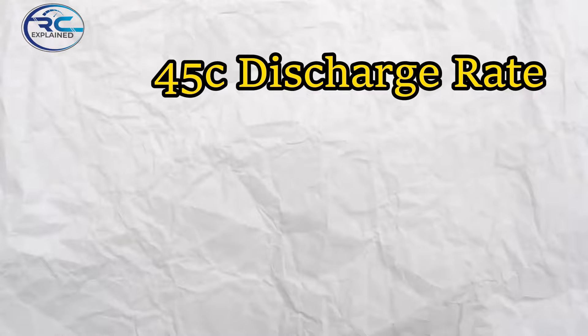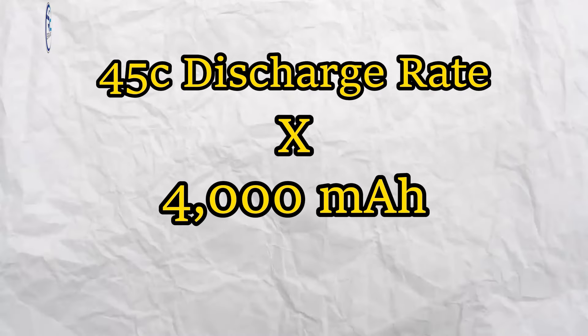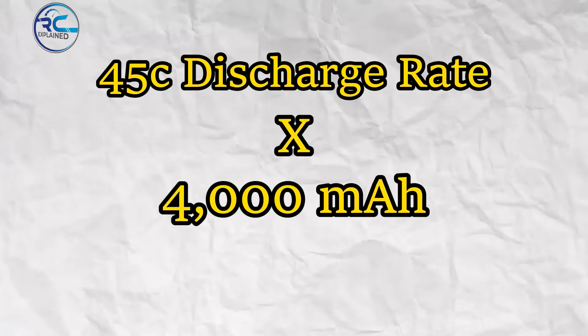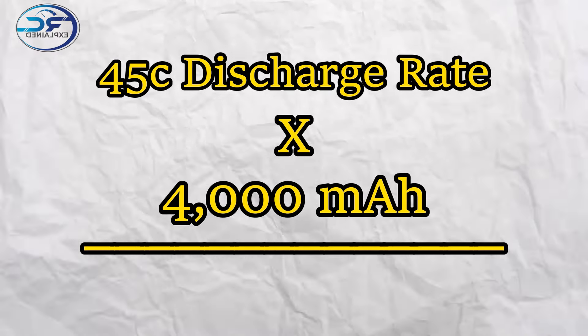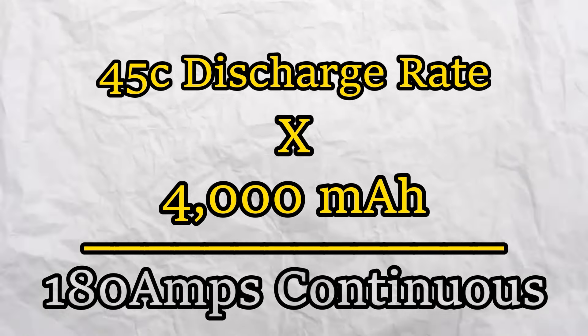Now simply put, if we take a 45C discharge rate and multiply that by our 4 amp hour, our 4,000 milliamp hour, we should get a battery pack that can dissipate 180 amps continuous. And I can already tell you, and you probably already know this, it's not going to do 180 amps. Let's see how it handles the 100 to 105 amp load test here in the video today.